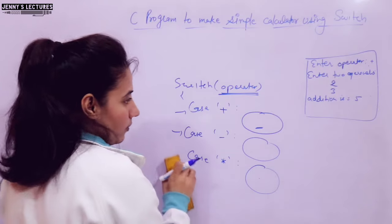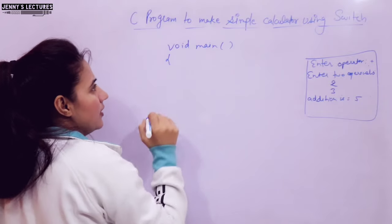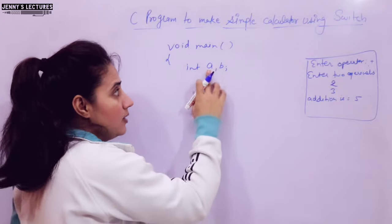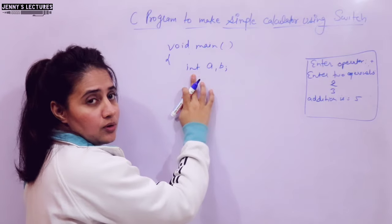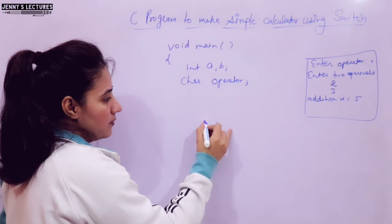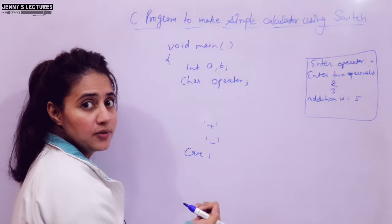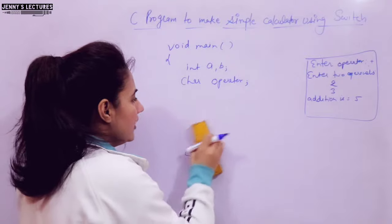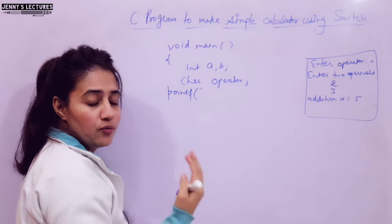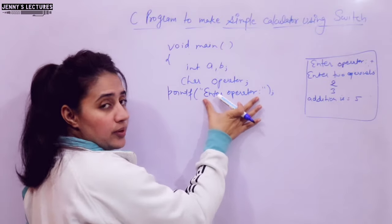Now let me write the complete program. Include stdio.h and conio.h. Write void main. I am taking two variables — integer a and b. Then I am taking a variable called operator of character type, because in the cases I am writing plus and minus as characters. I am not initializing the values in the program; the user will enter values at runtime. Use printf and scanf to take input. First printf says 'enter operator,' then scanf reads it using %c and address of operator.